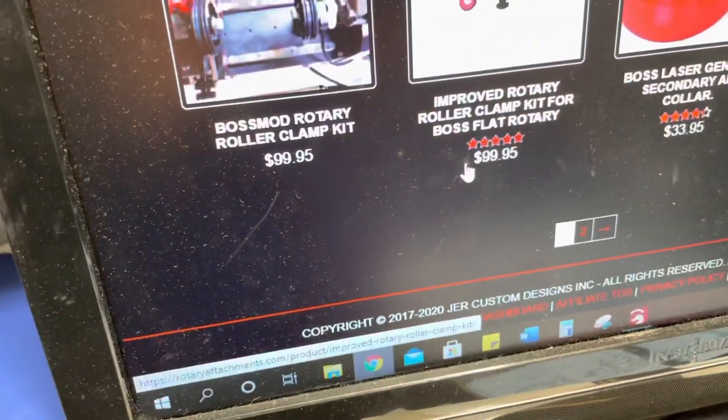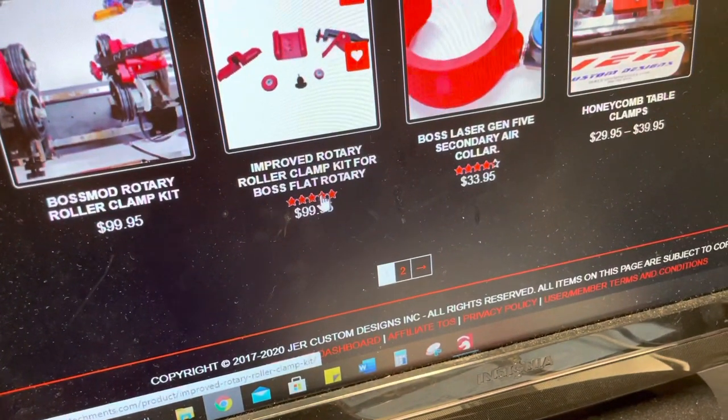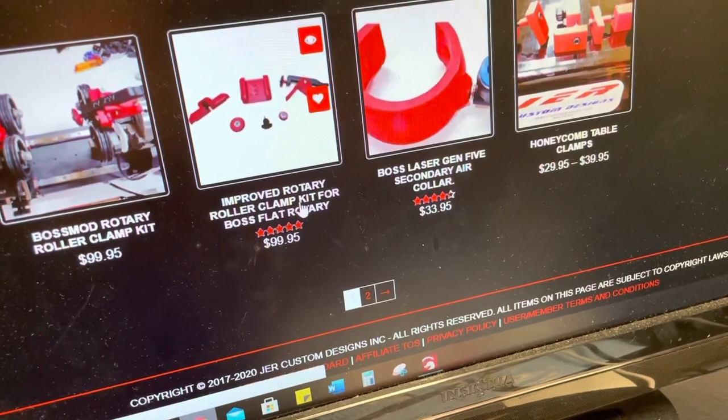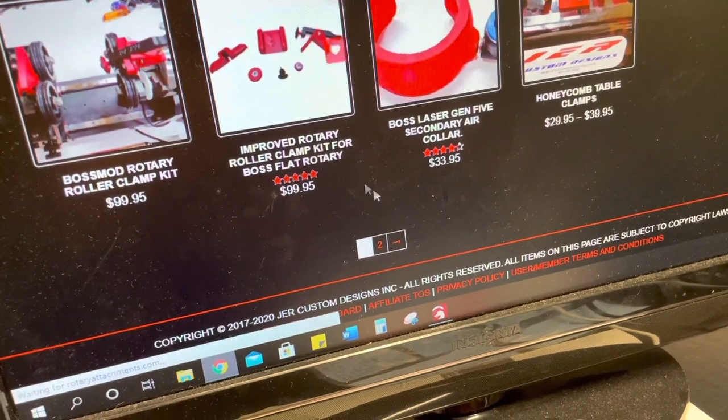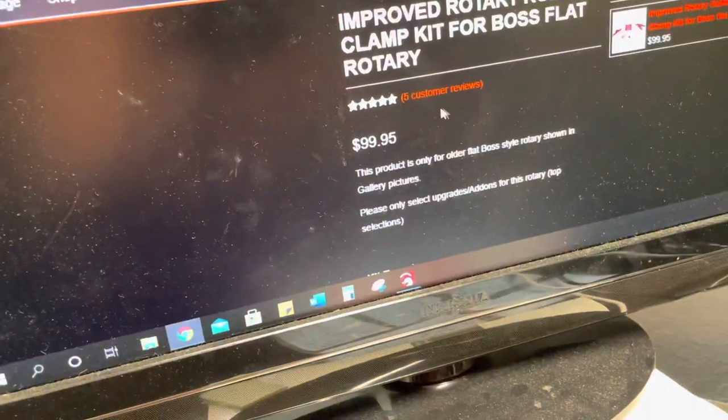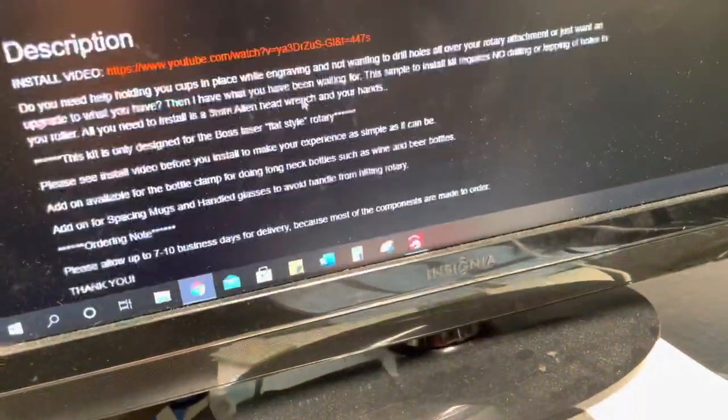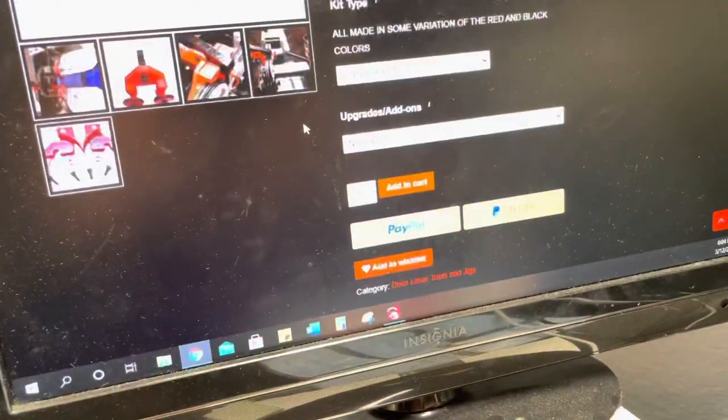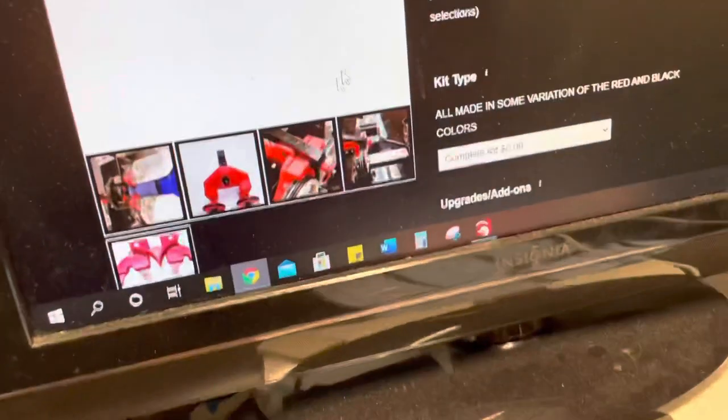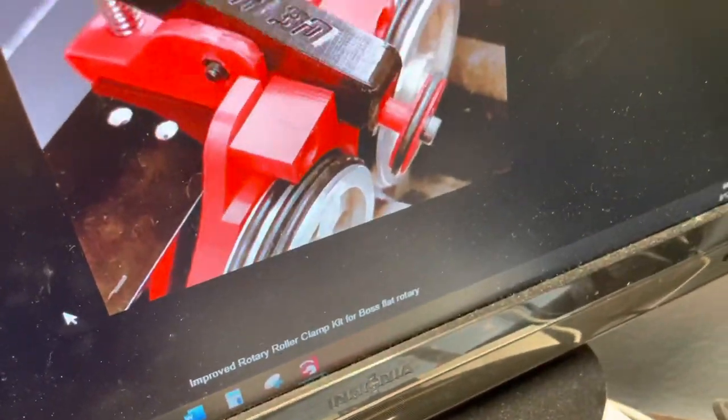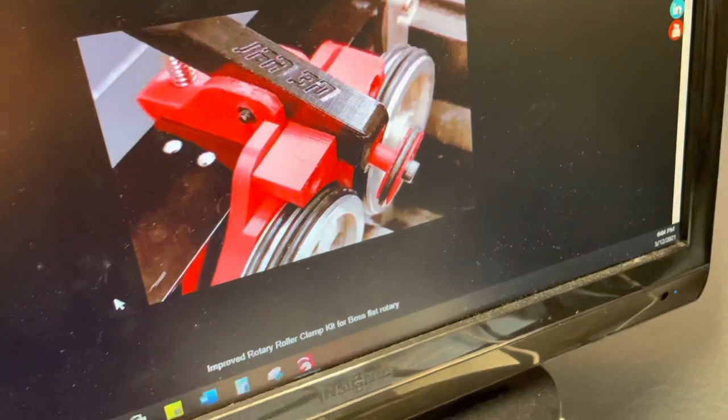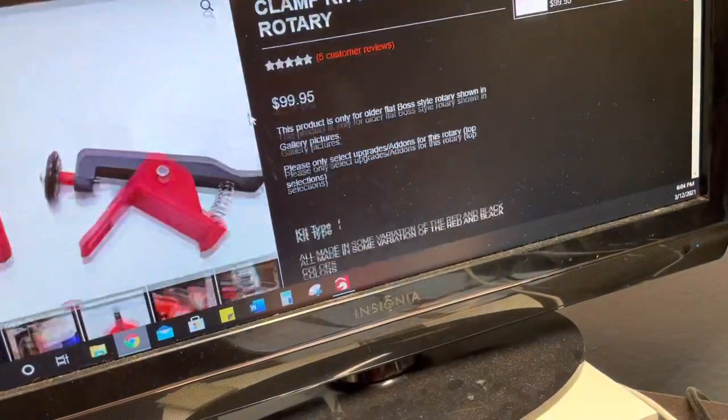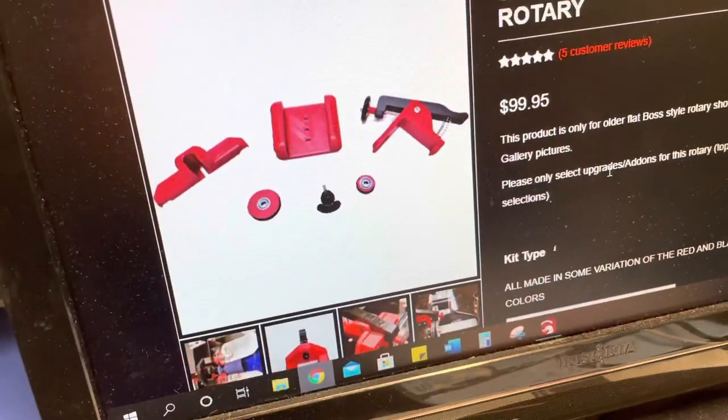You got boss mod rotary roller clamp, improved rotary roller clamp kit for boss flat rotary. So this is the one I purchased right here. And then what's nice is they have a YouTube link that shows you how to install it and everything. It does not come with those O-rings that you see, the bigger upgraded O-rings. You have to purchase those on Amazon. So anyway, that's the kit, that's the one I bought.